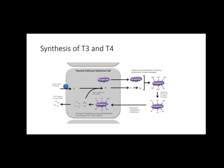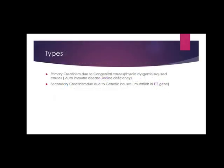Regarding release: in step six, there is endocytosis of thyroglobulin colloid. In step seven, cleavage of T3 and T4 from thyroglobulin by lysosomal enzymes and release of hormones from the follicular cells into the blood. Cretinism has two main types: primary cretinism and secondary cretinism.